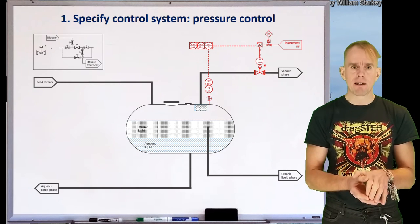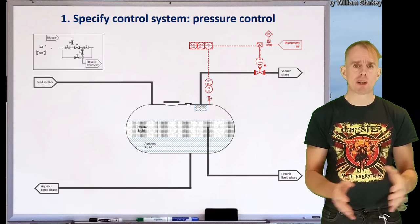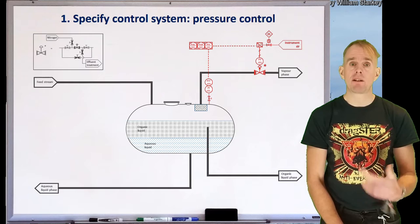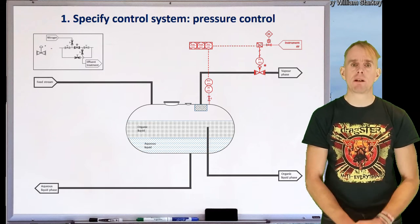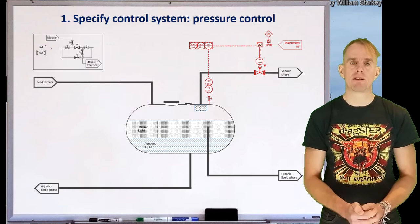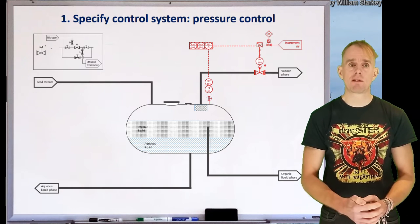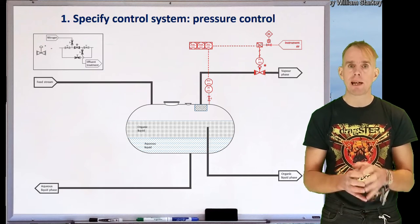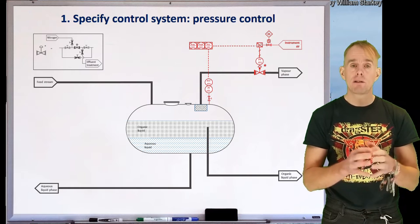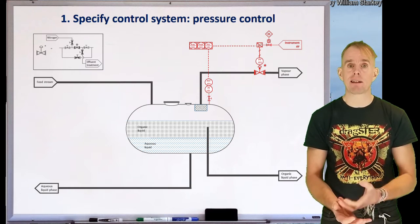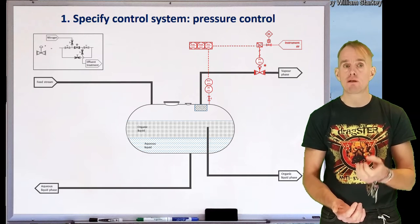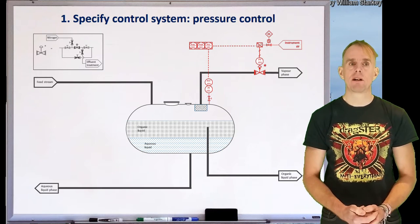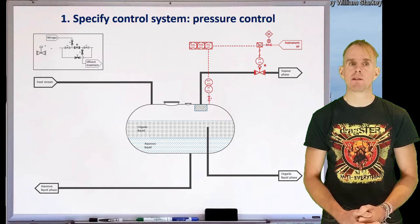The pressure indicator — the PI — will measure our pressure range, let's say 0 to 10 bar, and produce an electrical signal. That signal needs to be conditioned to fall within a control standard. Using the current standard of 4 to 20 milliamps, that conditioning is the function of the PIT, the pressure indicator transmitter. This produces an electrical signal, shown by the dashed line connecting clusters of instruments together.